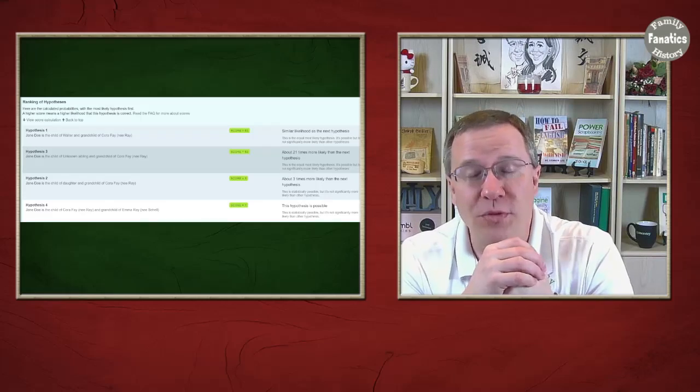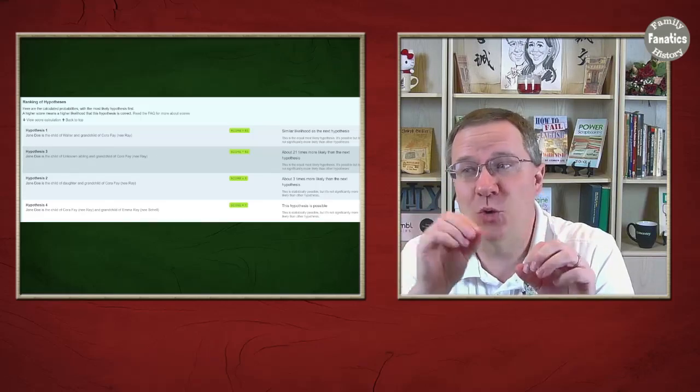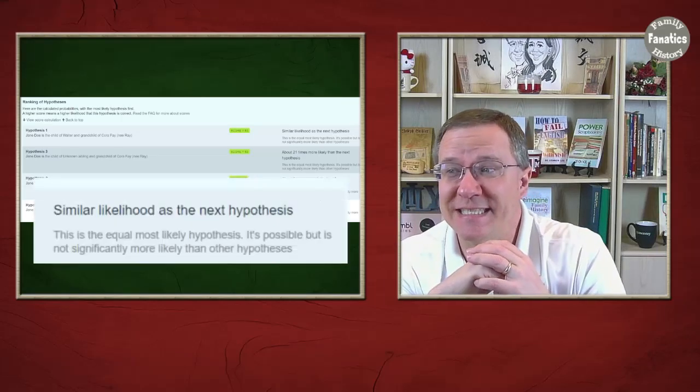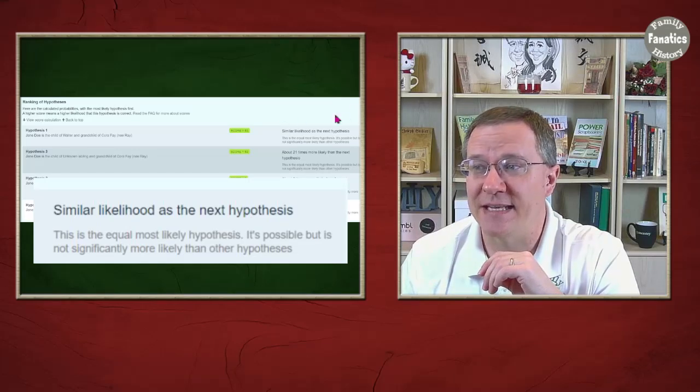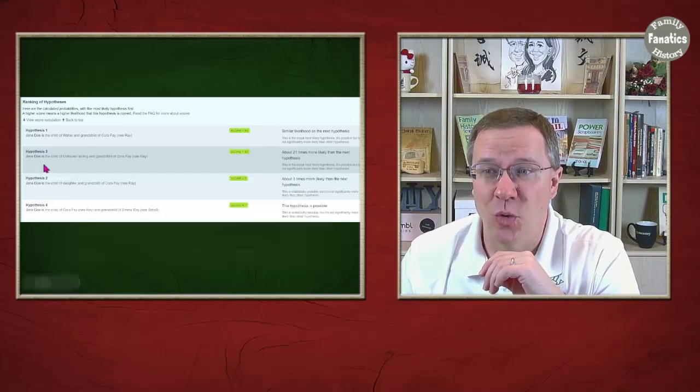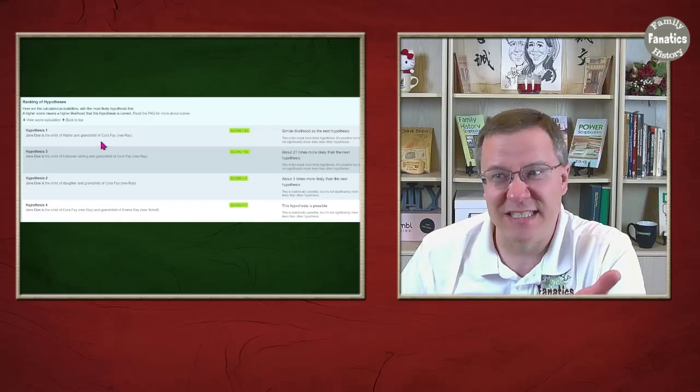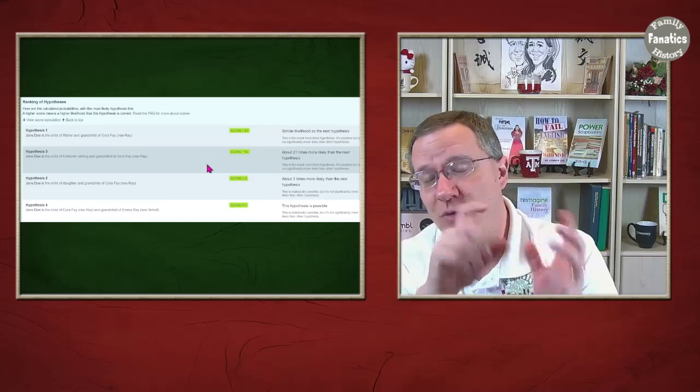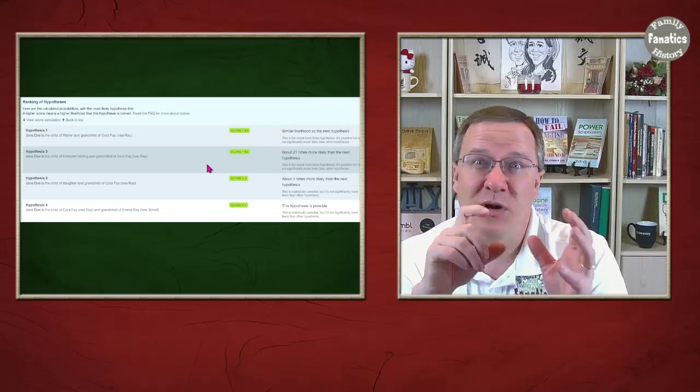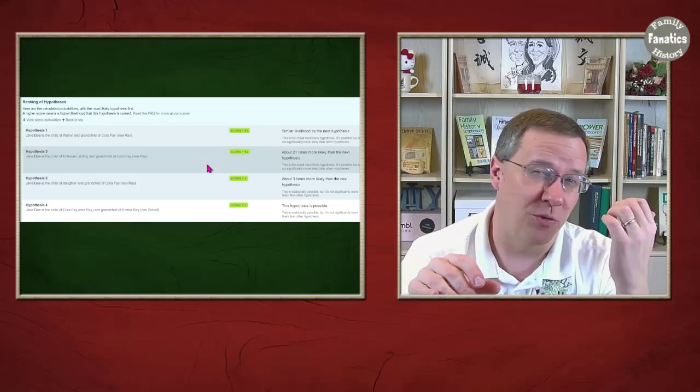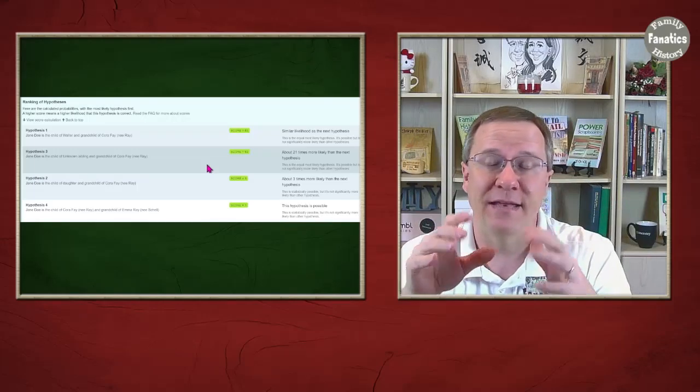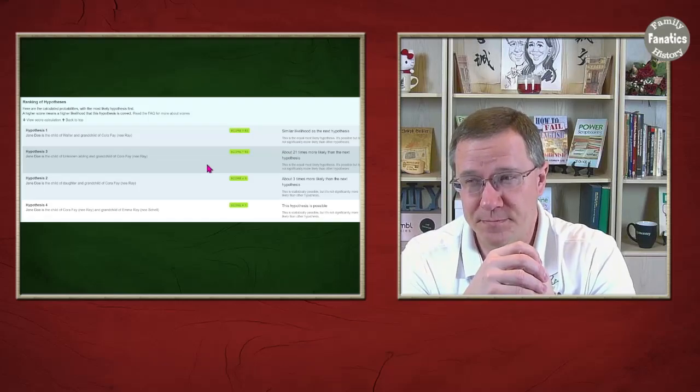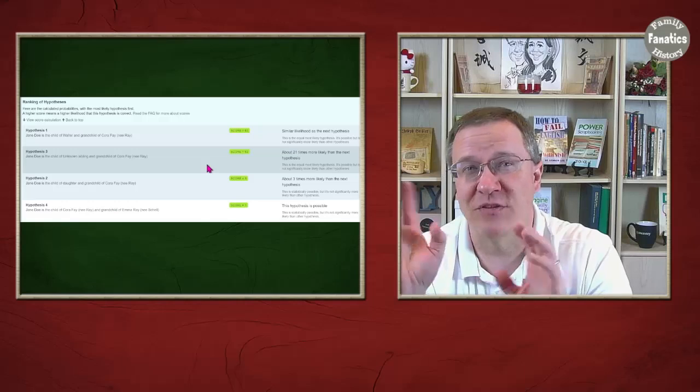Since the score is 63, you'll notice that what it says is it's a similar likelihood to the next hypothesis. So these are each equal, and it's really because we're talking about a grandchild of this person. If Jane Doe is a grandchild of this person, whether they're a grandchild through one sibling or a grandchild through another sibling that is not represented on the tree, those are equal amounts there. So that is the first place that we're going to want to research. We're going to want to research any children of Cora Fae and see whether or not Jane could have been the grandchild then of Cora Fae.